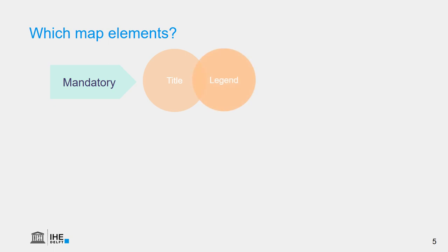It is also mandatory to have a legend, which forms the key between the elements we see on the map and the symbology and relates it to the real features. There needs to be a scale bar so we know the scale of the map, and a north arrow that shows how it is rotated relative to the north pole.